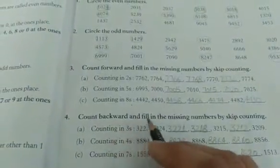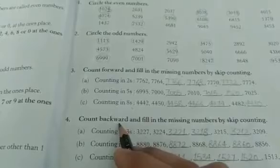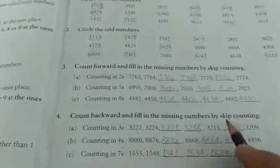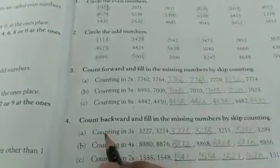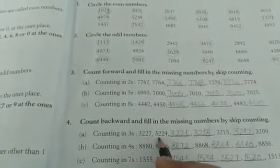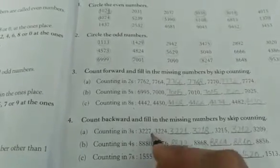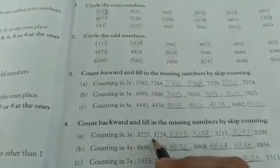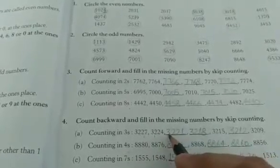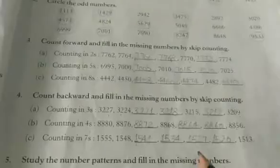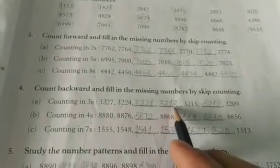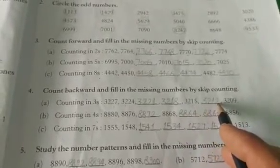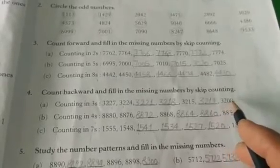Count backward and fill in the missing numbers by skip counting. Backward means we count going back. Counting in 3s means we skip 3 numbers. In backward counting: 3,227 — skip 3 numbers — 3,224 — skip 3 — 3,221 — next 3,218 — next 3,215 — next 3,212 — next 3,209.